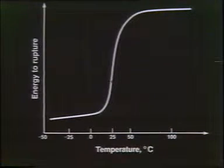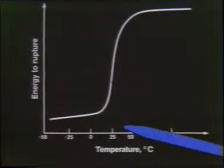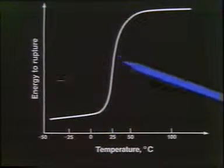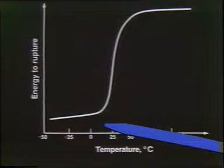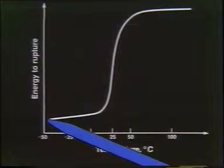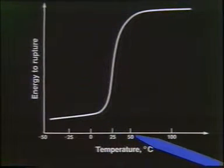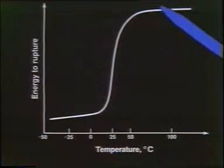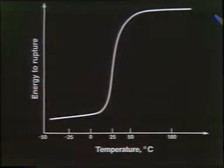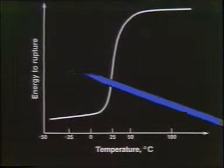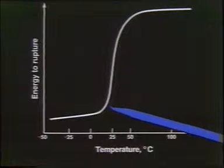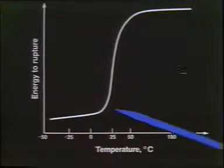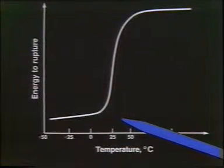The next slide plots energy to rupture on the vertical axis against temperature in degrees C on the horizontal axis, with room temperature approximately in the middle. Below room temperature the material is brittle and doesn't require as much energy to fracture. Above room temperature — around 50°C — the material has a flat upper shelf and becomes very ductile. The temperature at which this transition occurs is difficult to pin down exactly, but we call it the NDT — the nil ductility temperature — the temperature where ductility is approaching zero.